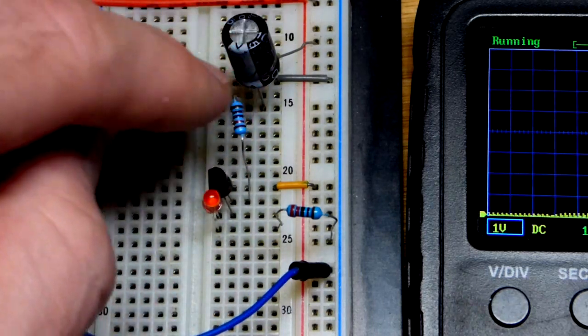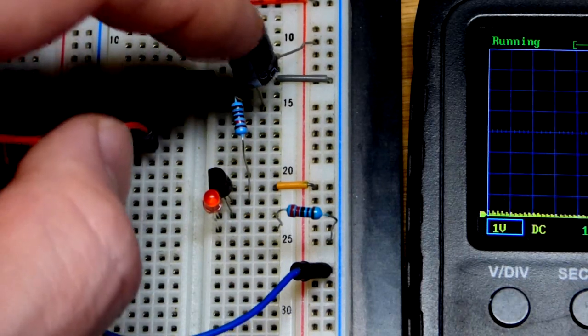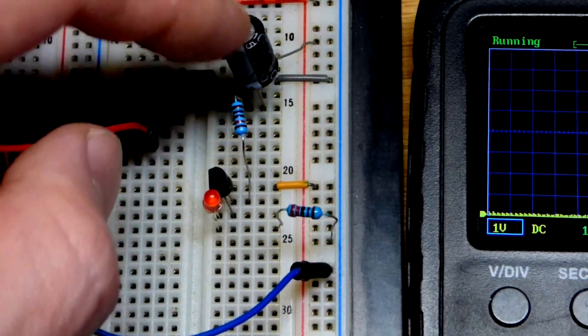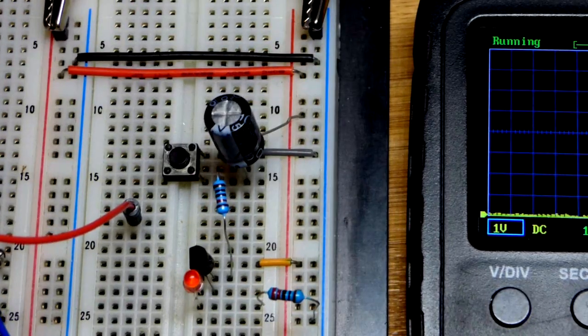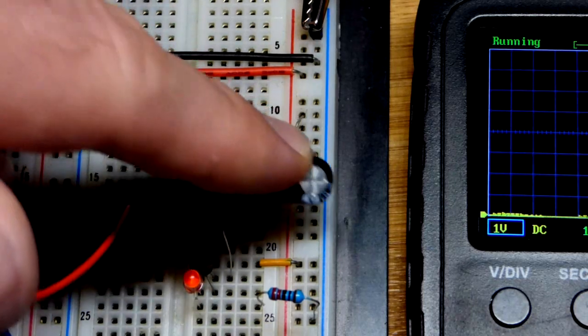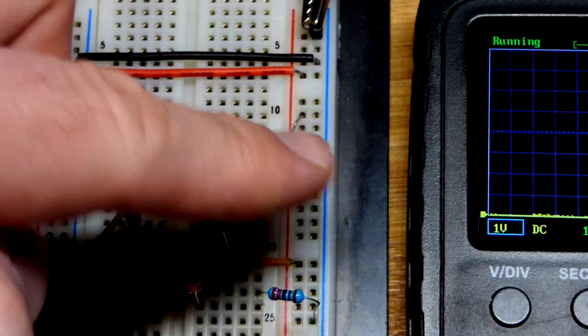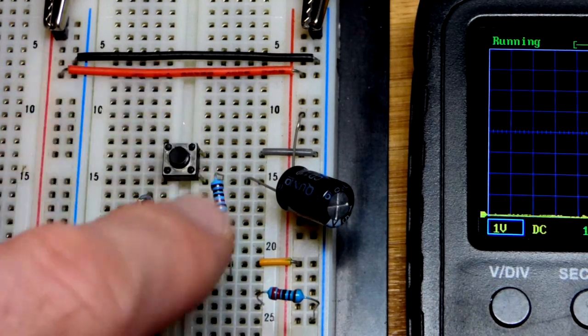220 ohm resistor coming to the middle, 10 kilo ohm resistor, and we got the negative side. This is a polarized capacitor. You've got to make sure that you put it in the right direction. The positive side is going up there, going over this gray jumper that goes to ground, which goes to the top of the switch.